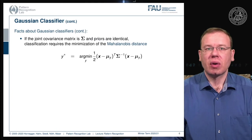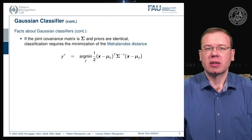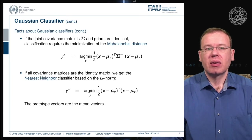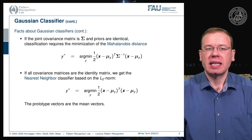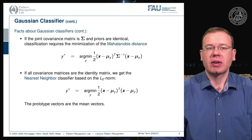If we have a single covariance matrix for all classes and the priors are identical, then classification reduces to minimizing the Mahalanobis distance — a distance where we measure the difference to the class centers weighted by the inverse of the covariance matrix. If we simplify further and use an identity matrix for the covariance, we would simply look for the nearest neighbor, computing the L2 or Euclidean distance to each class center and selecting the closest prototype.